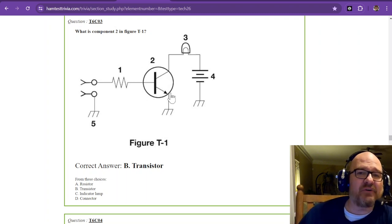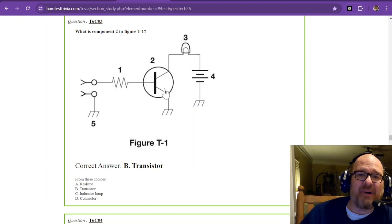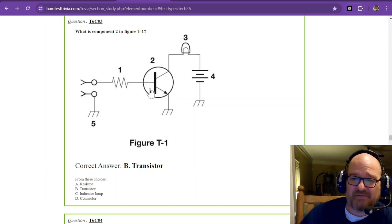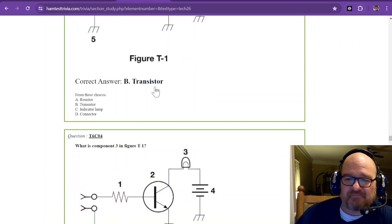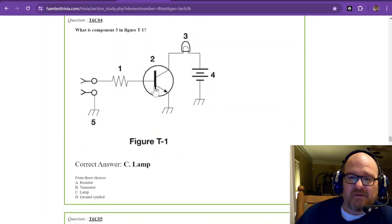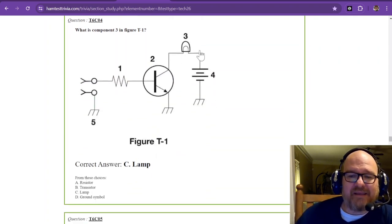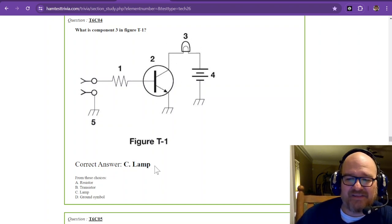If you want to know, it's called a BJT, which is a bipolar junction transistor. Question 4. What is component 3 in figure T1? Figure 3 is the lamp.